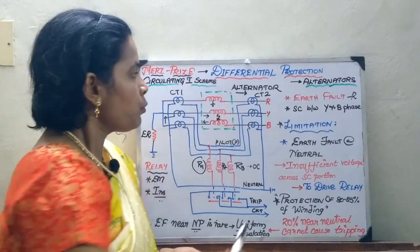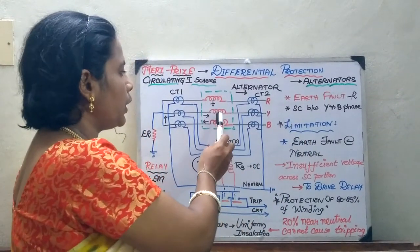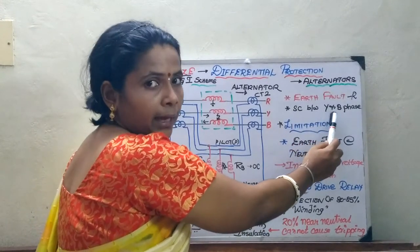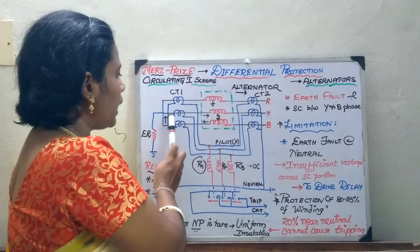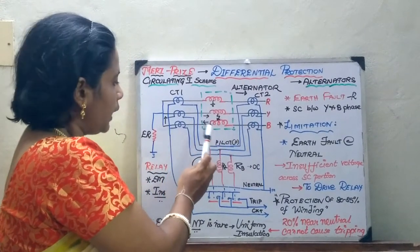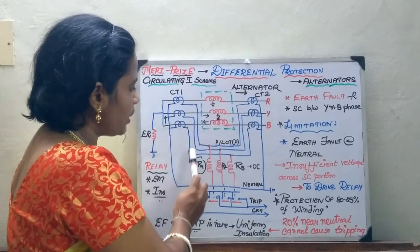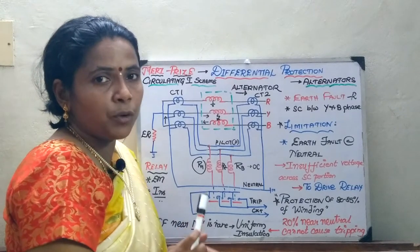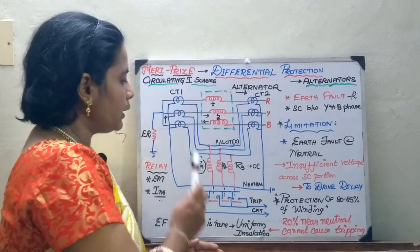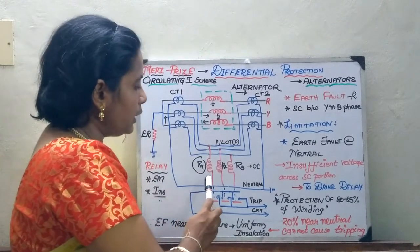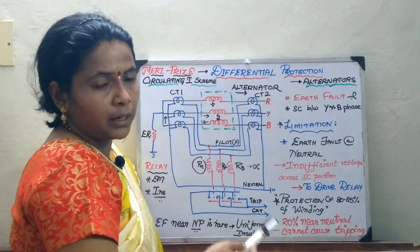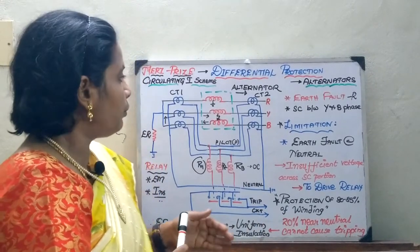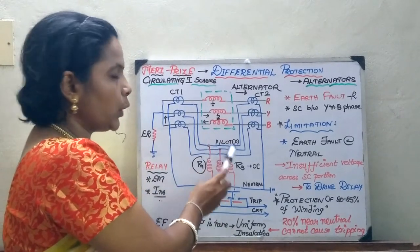Now consider a short circuit between the Y and B phases — a phase-to-phase fault. In this case, the current circulates through the Y phase winding and the B phase winding. As a result, relays R2 and R3 operate and trip the circuit. So if an earth fault occurs, relay R1 operates; if a phase-to-phase fault occurs, relays R2 and R3 operate and trip the circuit.